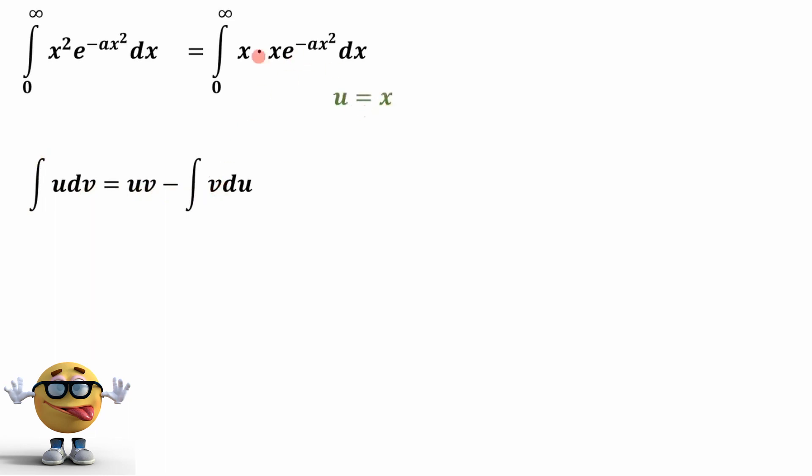set u equal to x. That means du is going to equal dx, and for the dv part right here, that's going to equal everything else. So we're just going to make that equal to everything else.